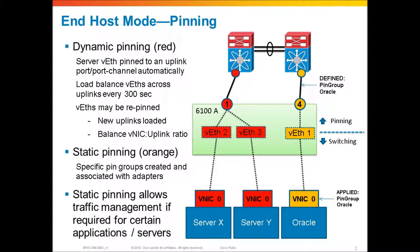We're showing dynamic pinning here in red and static pinning in orange. Dynamic pinning is what happens if you don't do anything special. If you just create servers, assign them VNICs, connect uplinks to the system, and turn it on, everything is going to be using dynamic pinning. That's where the fabric interconnect is picking an uplink for each server to use based on a decision that it makes at the time.